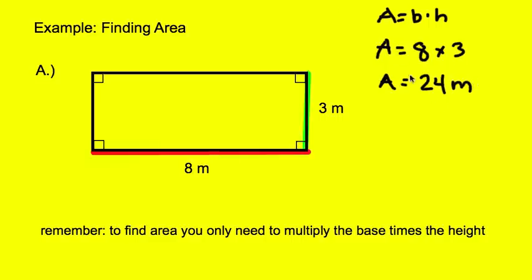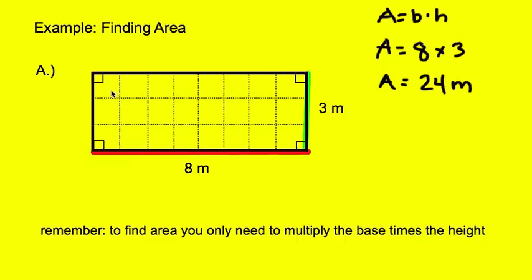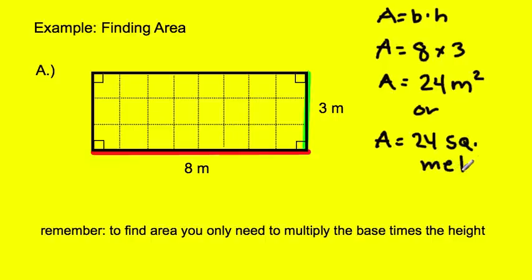You have to understand that area isn't a length — it's how many squares can fit inside of a shape. There are one-meter squares inside the rectangle, and there are 24 of them, so it's 24 square meters. It needs to be labeled as 24 meters squared. Either way, A equals 24 m² or A equals 24 square meters — either one of those will be fine.